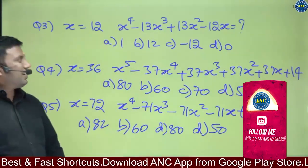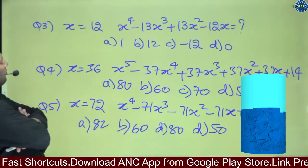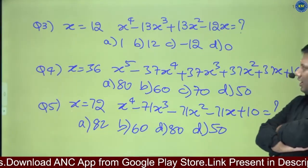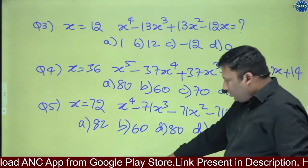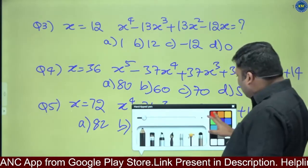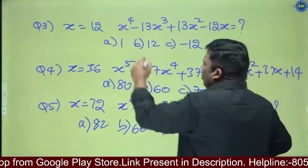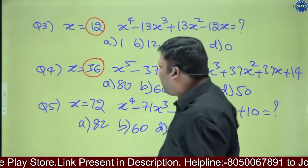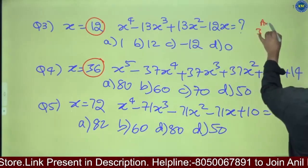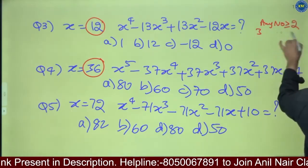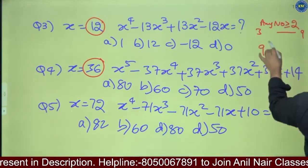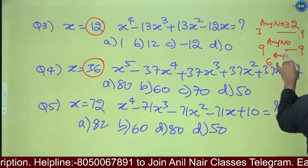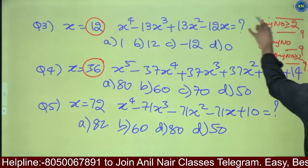Now see here — these are the questions. x equivalent to 12, 36, 72. Here is another beautiful observation. 12's digital sum is 3. 36's digital sum is 9. 3 power any natural number greater than or equivalent to 2 — digital sum is 9. 9 power any natural number — digital sum is 9. 6 power any natural number greater than or equivalent to 2 — digital sum is 9.